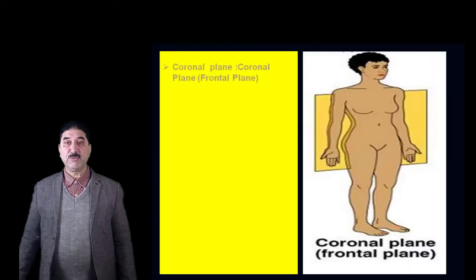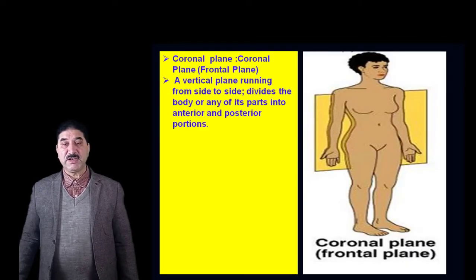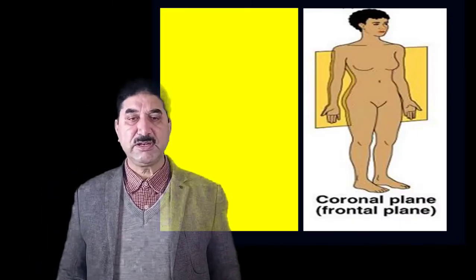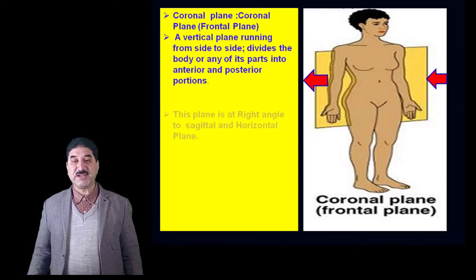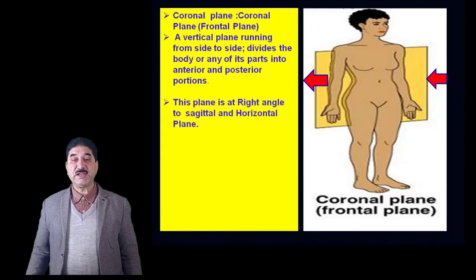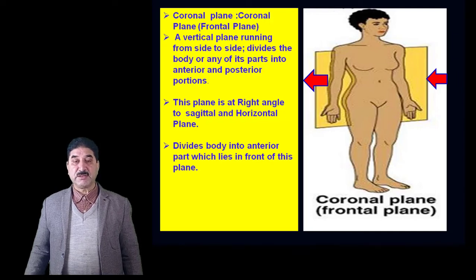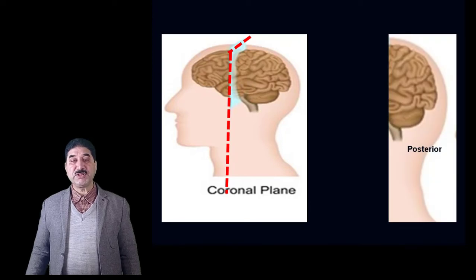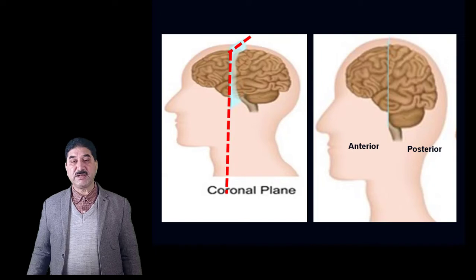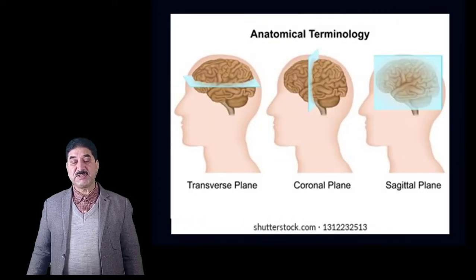The coronal plane, also called the frontal plane, is a vertical plane at right angles to the sagittal and horizontal planes. It runs from side to side and divides the body or any of its parts into anterior and posterior parts. The anterior part lies in front of this plane and the posterior part lies behind it. For example, a coronal plane passing through the head and neck divides it into a posterior part lying behind the plane and an anterior part lying in front.